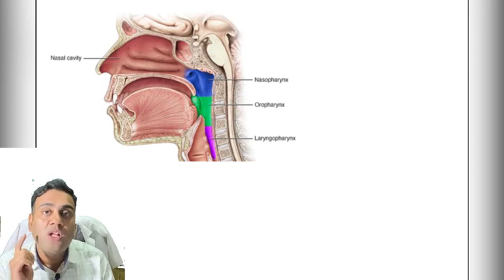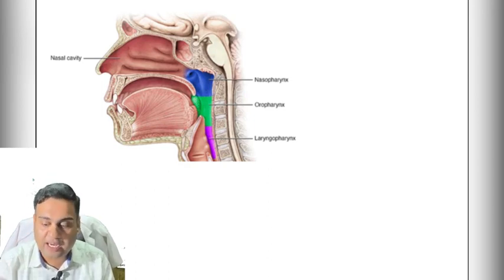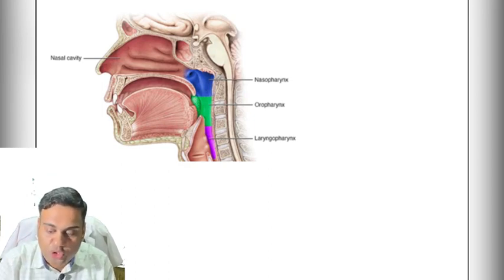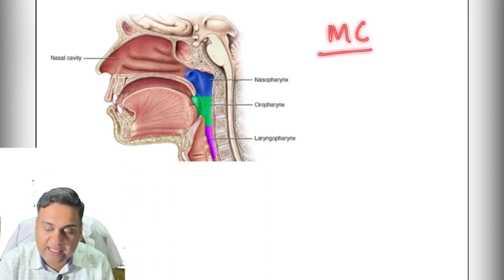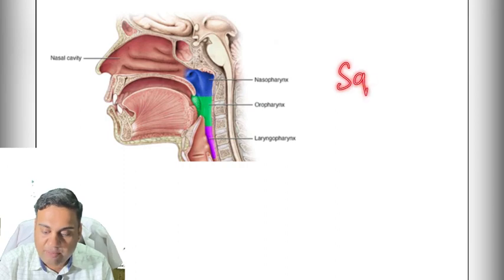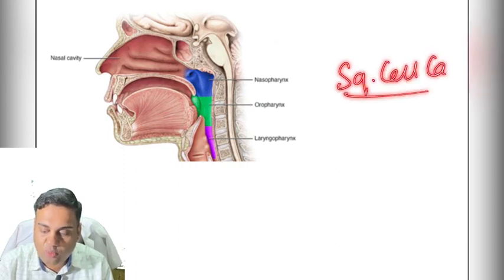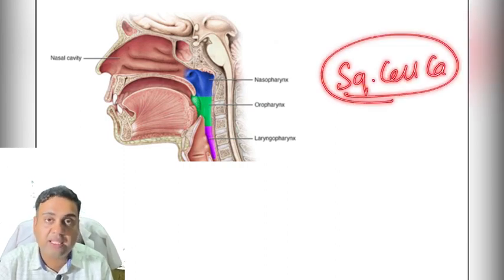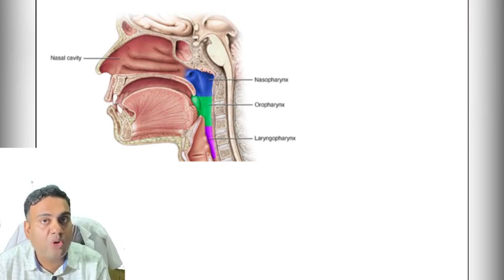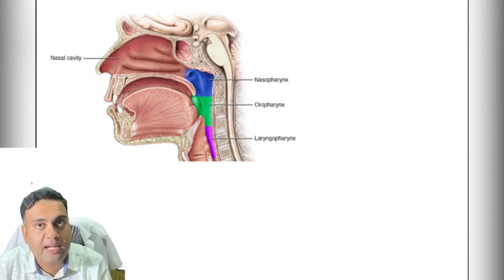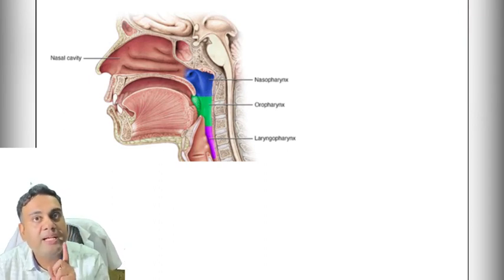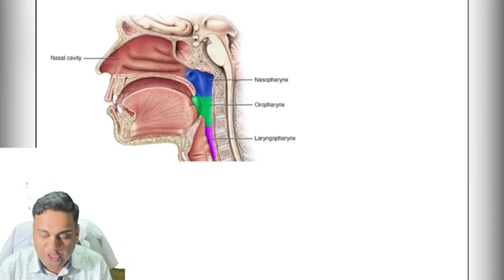Where the nasopharynx converts into the oropharynx, that squamocolumnar junction is a common site for cancer. The most common cancer of the pharynx is squamous cell carcinoma — not adenocarcinoma, not adenoid cystic carcinoma, but squamous cell carcinoma. Remember this.